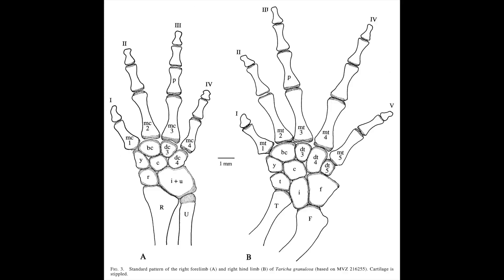We'll start with the standard anatomy of the limbs of Taricha — this is what you'd expect to see. It was also my least favorite part of vertebrate anatomy. All those tiny little odd-shaped wrist bones like the scaphoid, the lunate, the capitate. I struggled with this stuff 45 years ago, and it has completely evaporated from my brain since. I wonder if one of the reasons I gravitated towards fish is that most of this complexity is gone in the teleost fin. Fortunately, Shubin and his colleagues had a better awareness of the details than I ever did.